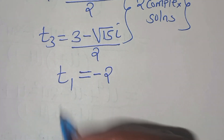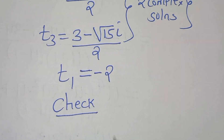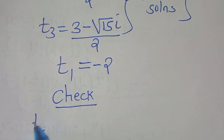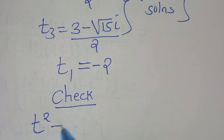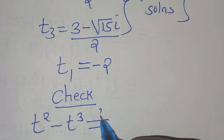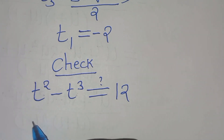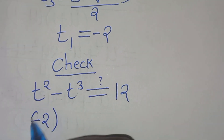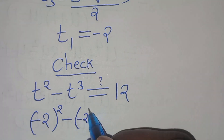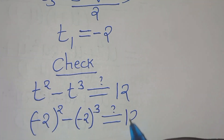The last step is to verify that the real solution satisfies the original equation. Recall that t squared minus t cubed should equal 12. Substituting t equals minus 2: minus 2 to the power of 2 minus minus 2 to the power of 3 should give us 12.